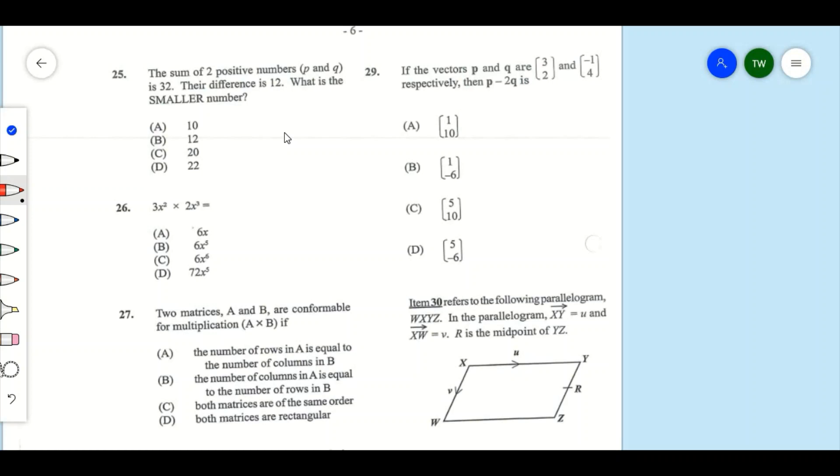Question 25: The sum of two positive numbers P and Q is 32. Their difference is 12. What is the smallest number? So what we know is that P plus Q is going to equal to 32, and P minus Q is going to equal to 12. So as you note, we have a pair of simultaneous equations here. So what we can do is add both equations together.